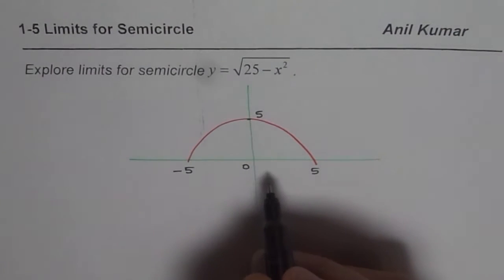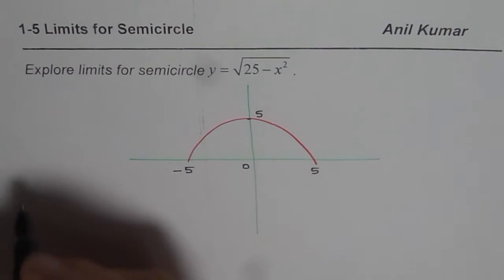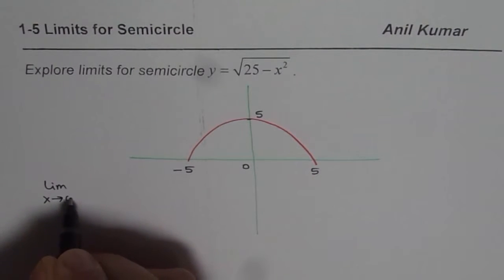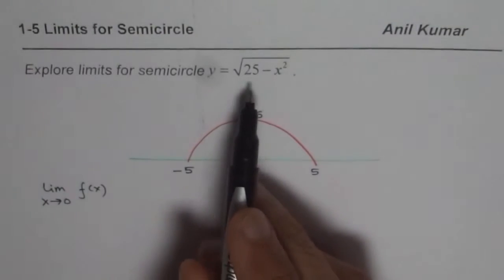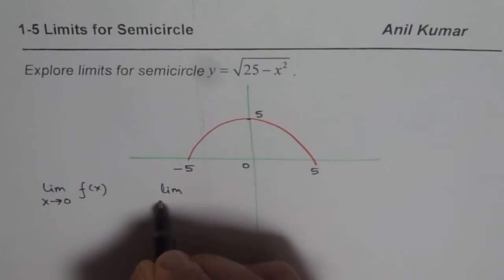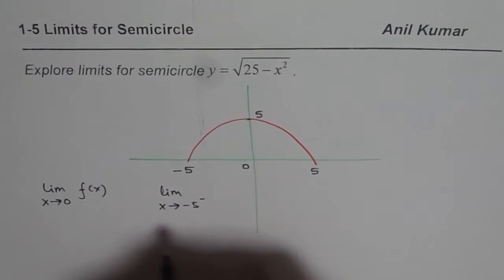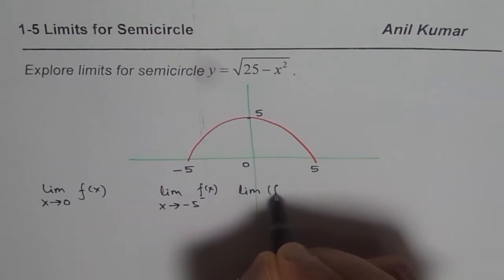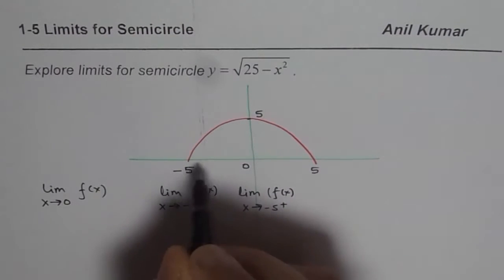Now what we are going to explore here is the limit of this particular function for different points. So let us see what is the limit of our function when x approaches 0. We will write f(x) where f(x) = √(25 - x²). Find limit of the function when x approaches minus 5 from the negative side. And the limit of f(x) when x approaches minus 5 from the positive side, that means the right side.